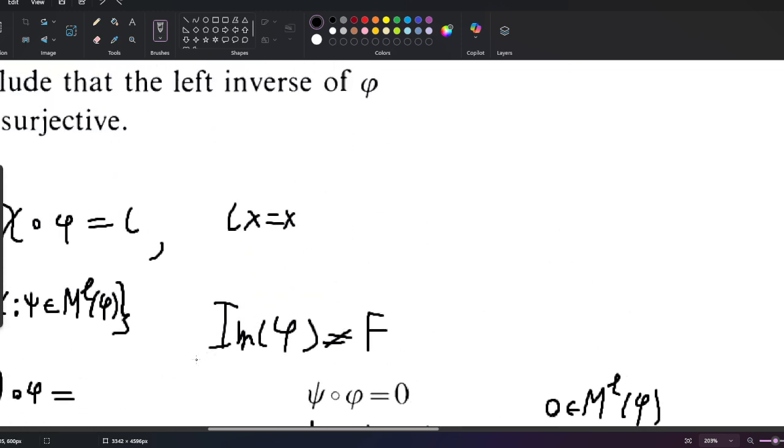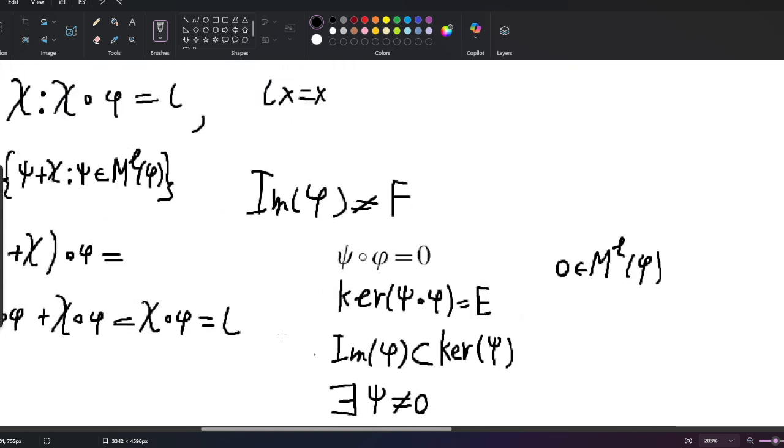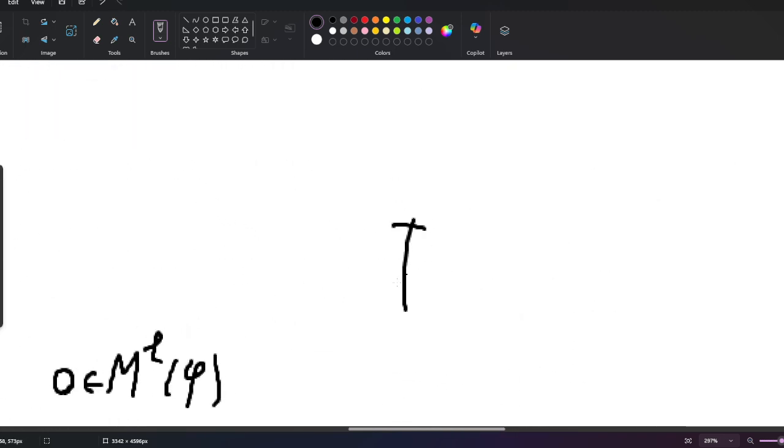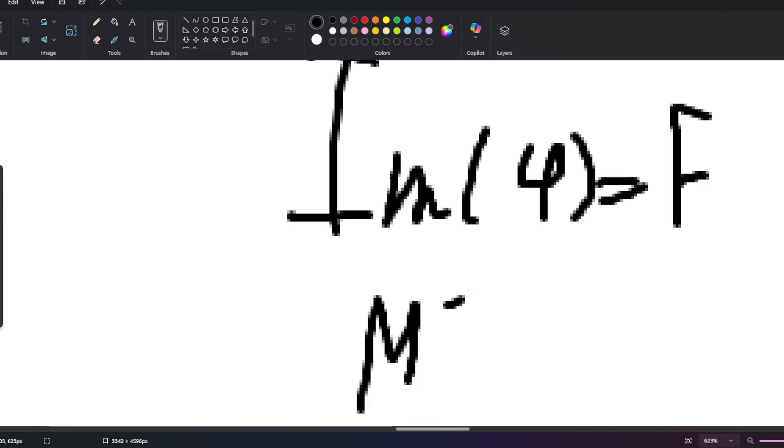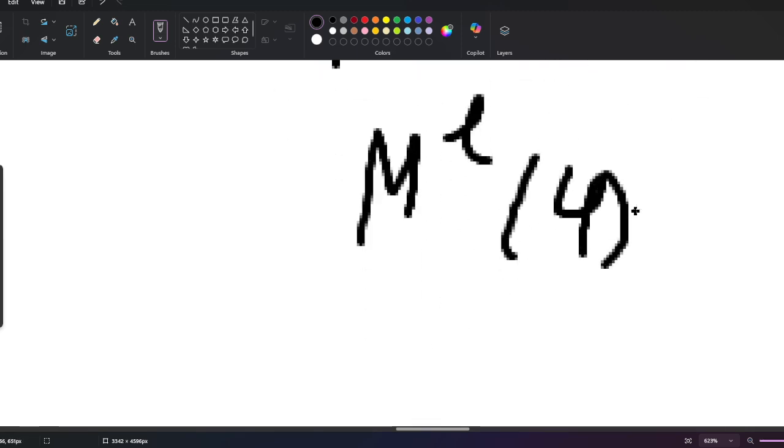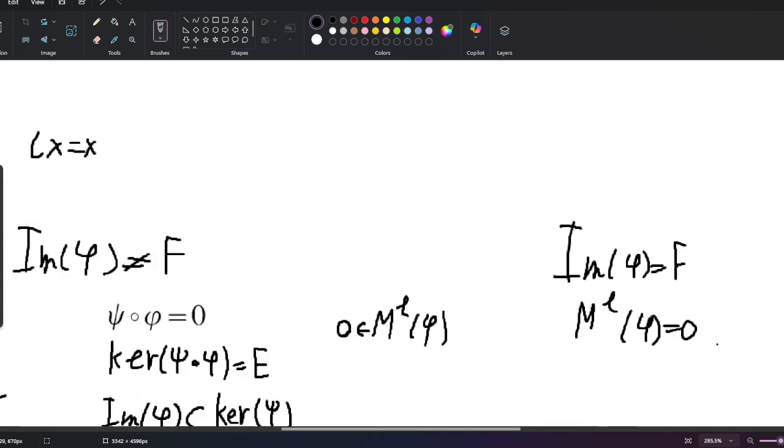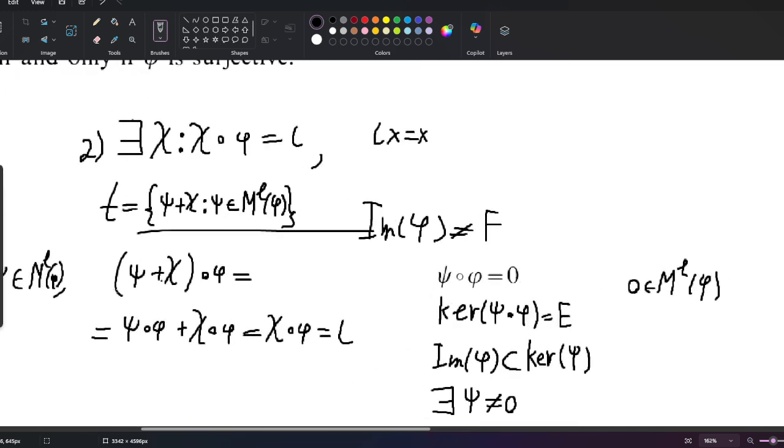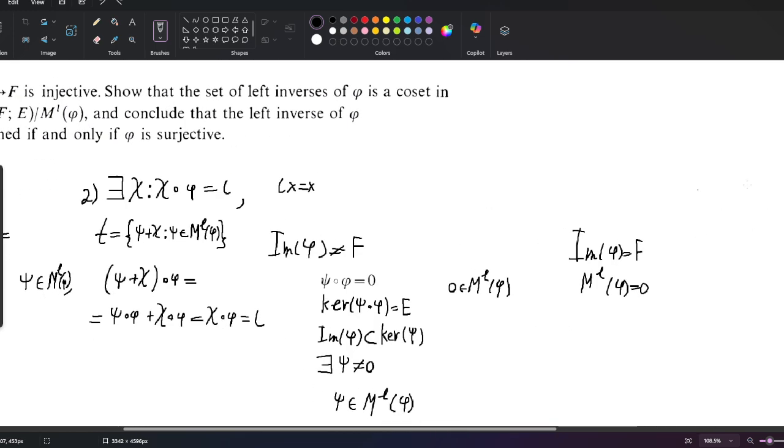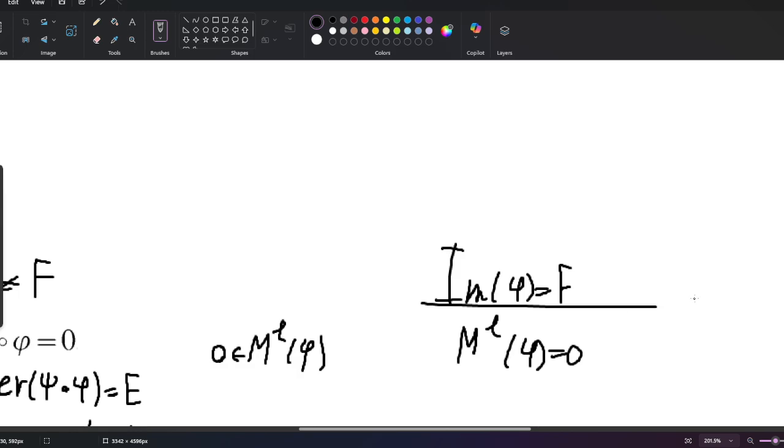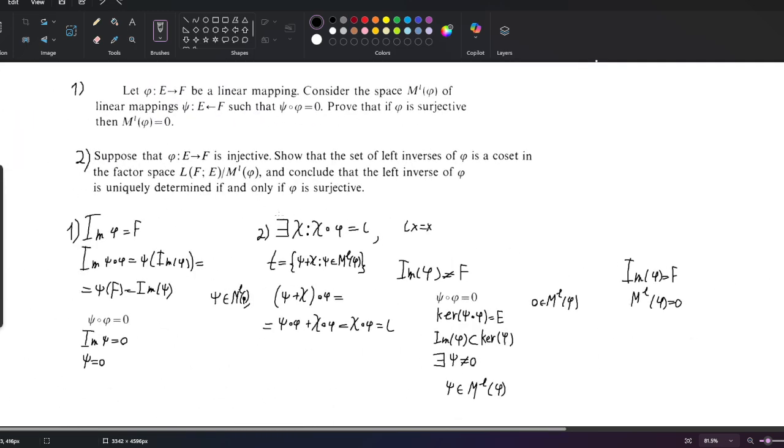This implies that if the image of phi is not equal to F, it's not surjective, but if the image of phi equals F, it's surjective and M'(phi) equals zero. So this coset will have only one inverse, and phi will be an isomorphism with a unique inverse. I'm kind of overcomplicating things, but I think you get the point. That's it for today, bye.